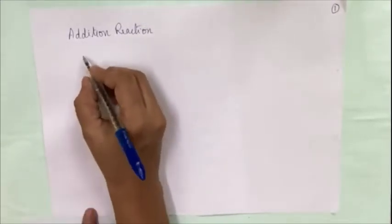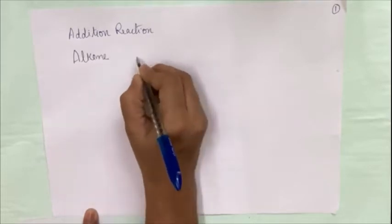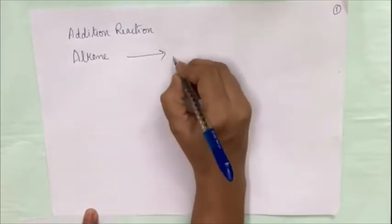Hello students, today we will continue with the chemical reactions from the chapter Carbon and its Compounds, which is part of class 10 science content. Addition reaction in general can be written as follows: an alkene can be converted to an alkane.